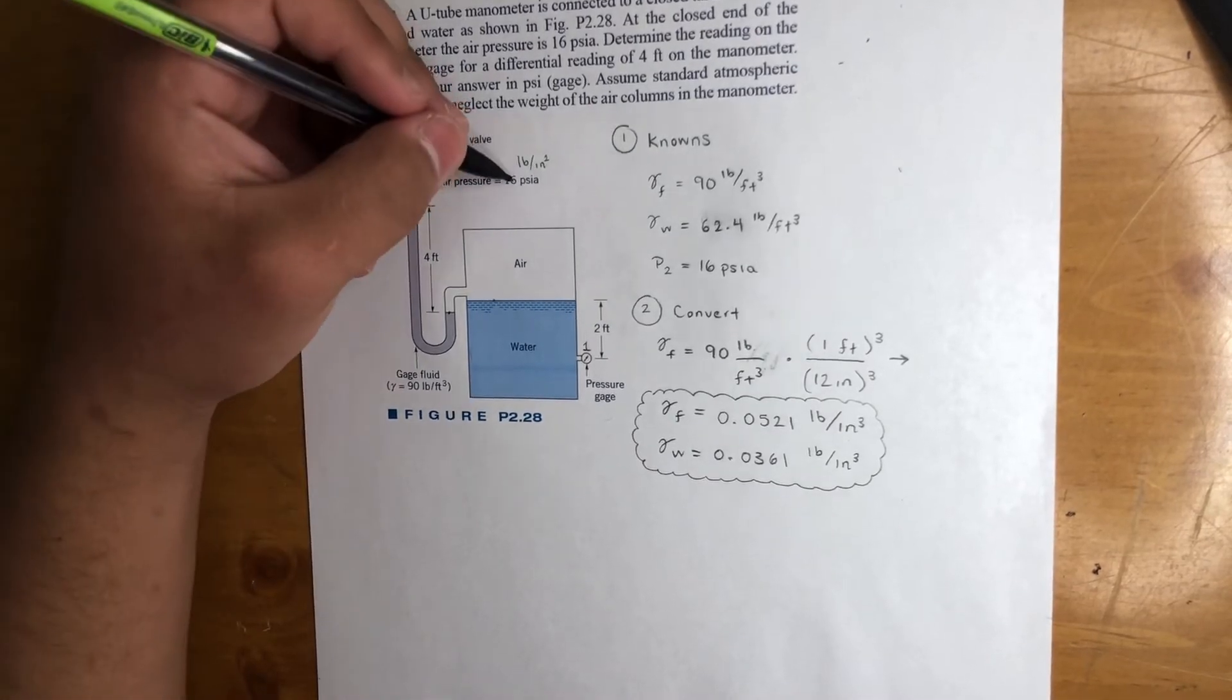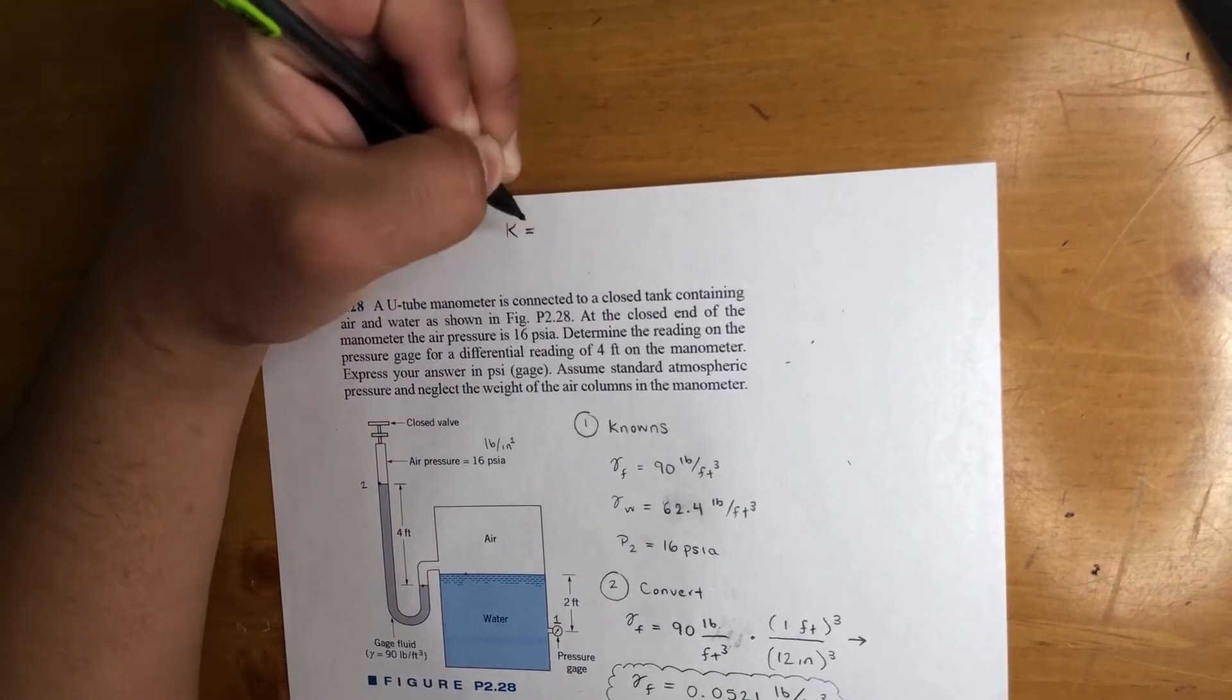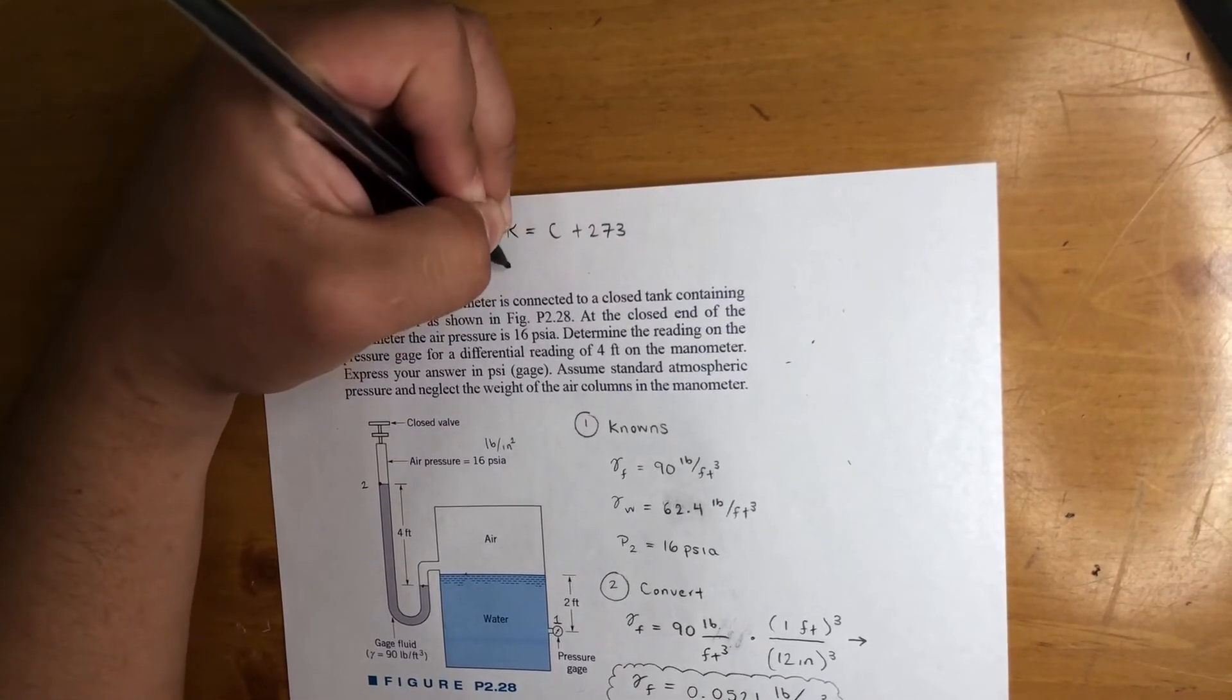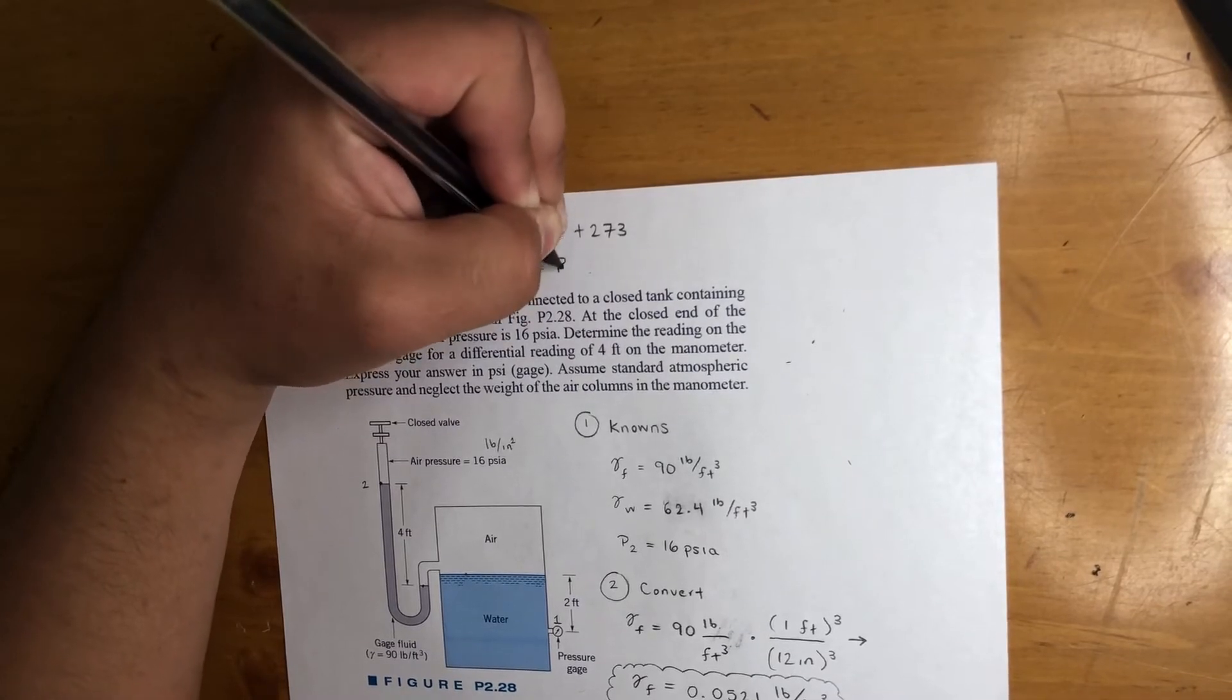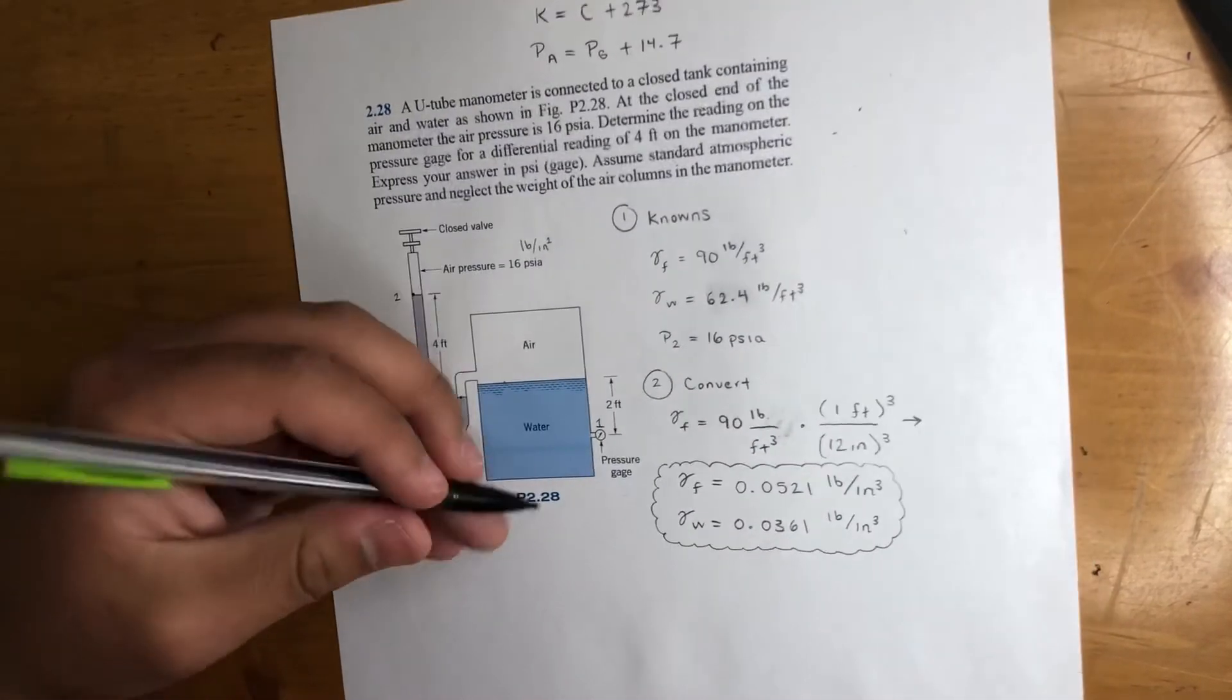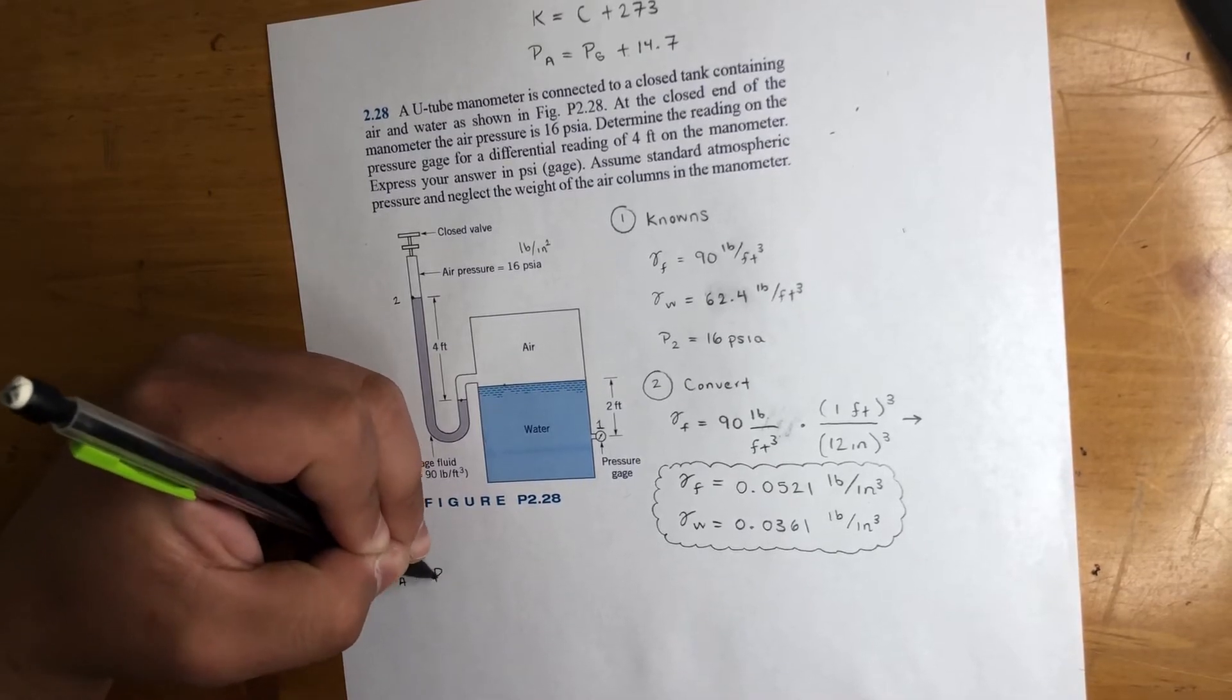So we also have to convert this pressure, right? It's psi absolute, we want gauge pressure. So, I'm not sure if you'll be taking thermal at the same time, but you'll know that to convert Celsius into Kelvin you just add 273, right? Same thing with gauge pressure and absolute. So to get the gauge pressure in this case, if you have absolute, you'll just add 14.7.